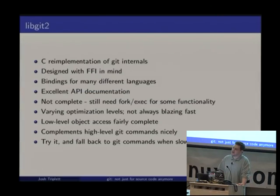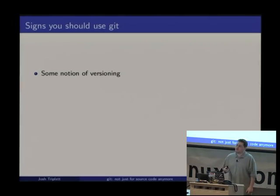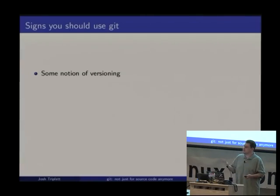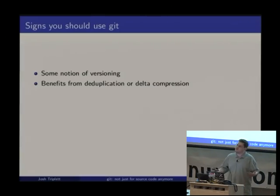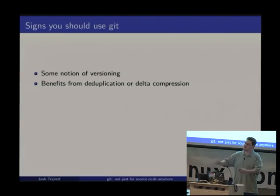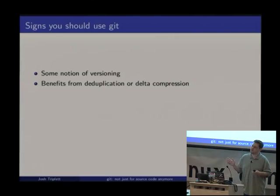With those programmatic access methods in mind, here are signs that Git is probably the right data store for your next application. First, if you have some notion of versioning — you're building a wiki or something else where edits over time happen — a version control system is a natural choice. Even if you don't, keeping historical records is useful anyway. Also, benefit from Git's deduplication and delta compression: don't compress data before committing it to Git — don't commit .gz files. Let Git handle compression; it can then delta-compress against the actual content.